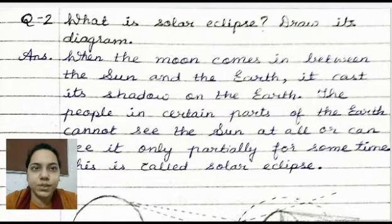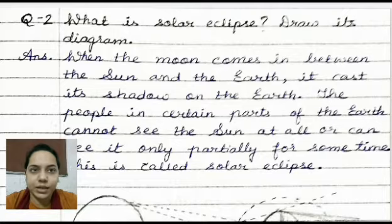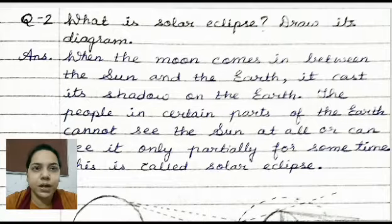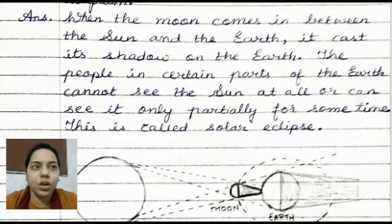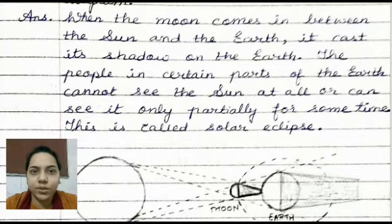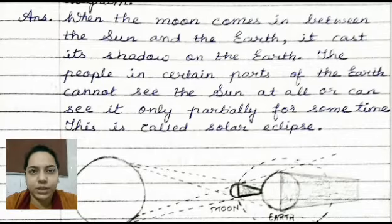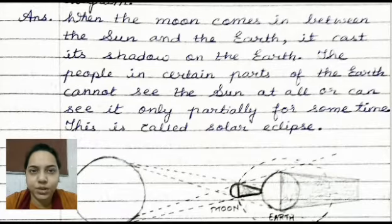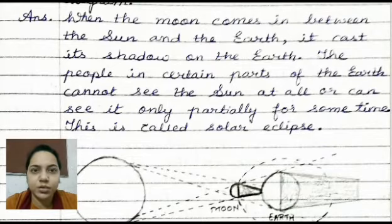Answer. When the moon comes in between the sun and the earth, it casts its shadow on the earth. The people in certain parts of the earth cannot see the sun at all or can see it only partially for some time. This is called solar eclipse.